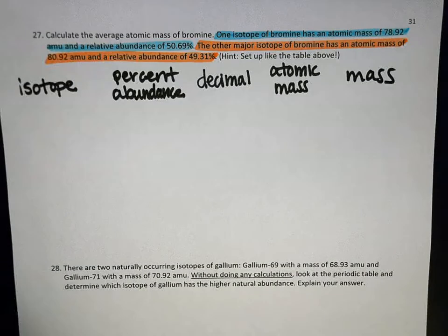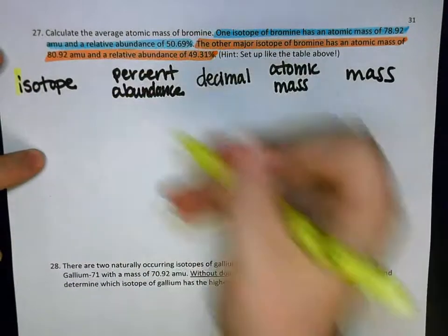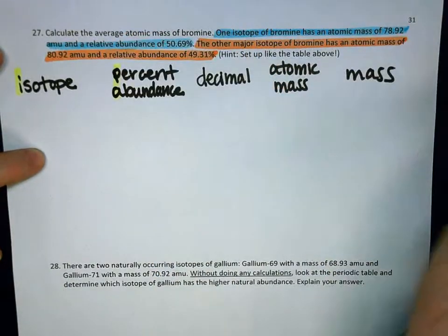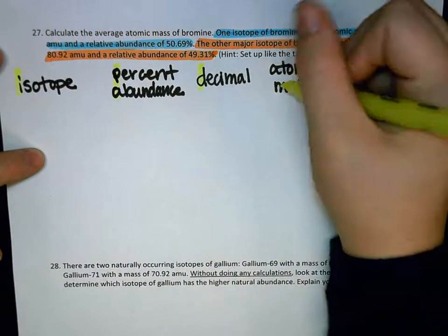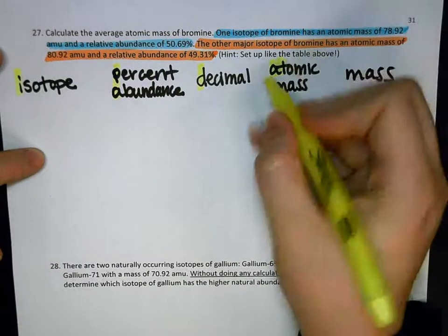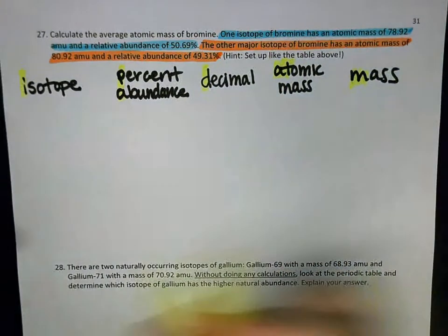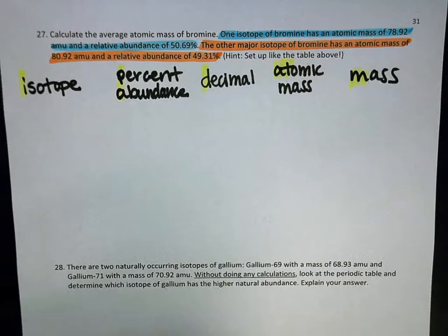You can remember, I passed Denny's at midnight. I passed, P-A. Decimal is Denny's. Atomic mass is at, and midnight is mass. I passed Denny's at midnight.